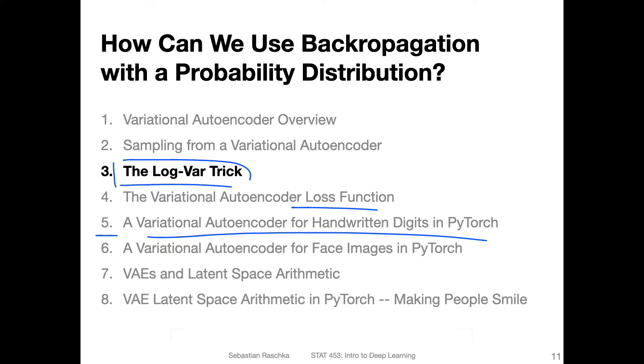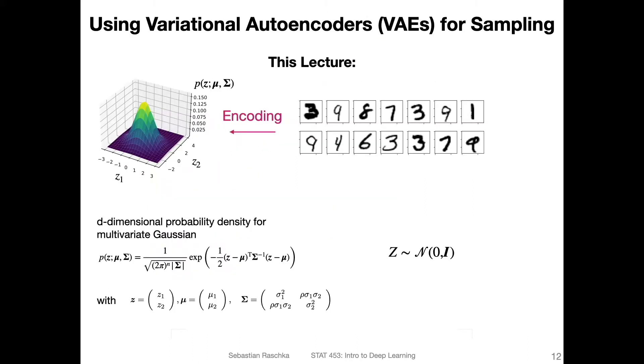What this is about is the fact that we are training a variational autoencoder, which is still a neural network for which we want to use backpropagation. But if we have a probability distribution, how do we backpropagate with a probability distribution? Or if we have a random variable, how do we deal with that using backpropagation? This is where the log-var trick will come into play.